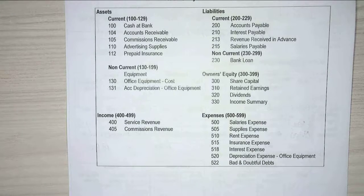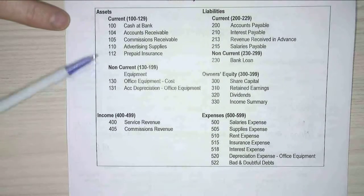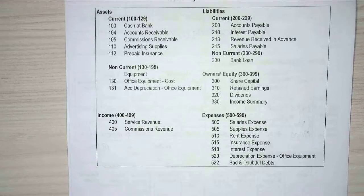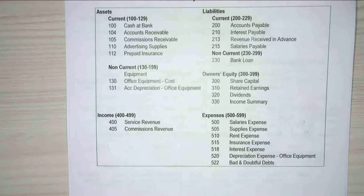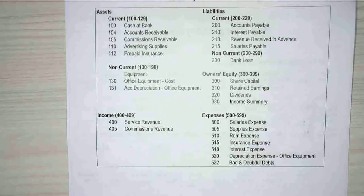When we look at this, we're looking at assets being current and non-current. Everyone remembers current and non-current assets? Current and non-current liabilities? What's the difference? Within 12 months or less. Current being 12 months or less, non-current being more than 12 months.